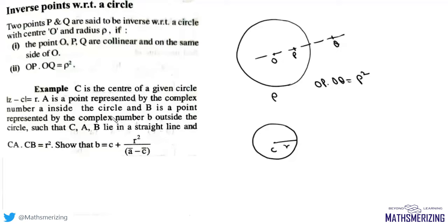Now A is a point represented by complex number a inside the circle, and B is a point represented by complex number b outside the circle. So we have two points A and B, one lies inside the circle represented by a, and this is represented by b.